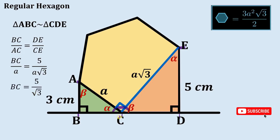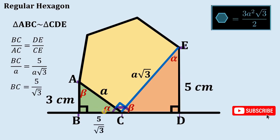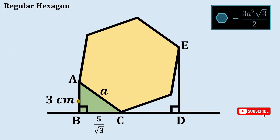Therefore the length of side DC is 5 over square root of 3. From here we can now solve for the value of a. Let's focus on triangle ABC.